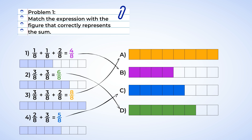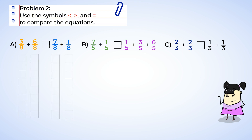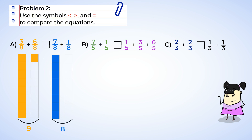And now that we've done our matching, let's compare. Use the symbols less than, greater than, and equal to to compare the equations. Starting with letter A, we have three-eighths plus six-eighths compared to seven-eighths plus one-eighth. Let's fill in a visual model to help us out. We can fill in three sections and then six more sections, giving us nine sections. Now compare that to the second expression: seven sections shaded, then one more. Nine sections filled in is more than eight sections. So three-eighths plus six-eighths is greater than seven-eighths plus one-eighth.